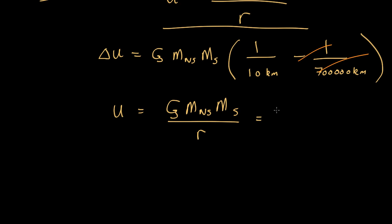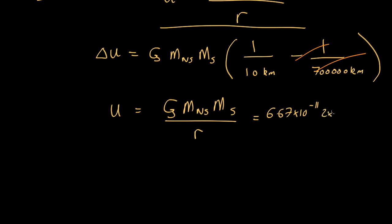So if we plug numbers into this, that's 6.67 by 10 to the minus 11, that's G. Mass of the neutron star is going to be 1 solar mass, so that's 2 by 10 to the 30 kilograms. Times the mass of the shell, that's 9 solar masses, times 9, times 2 by 10 to the 30. All over 10 kilometers, so 10,000 meters, which comes out as about 2 by 10 to the 47 joules.